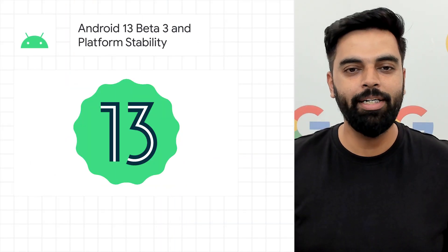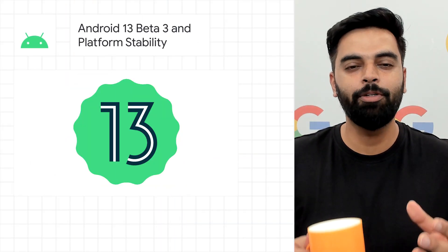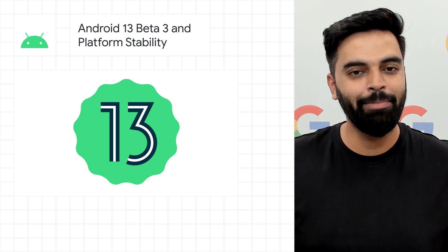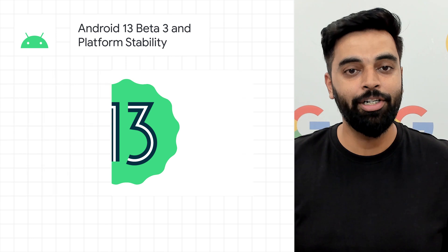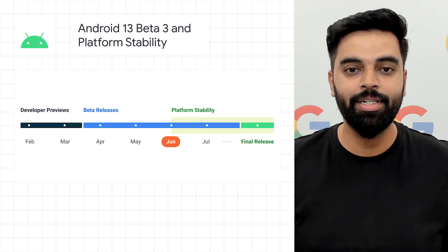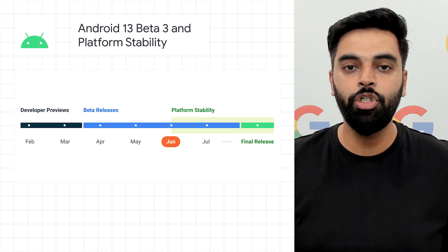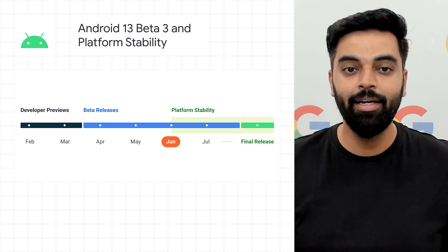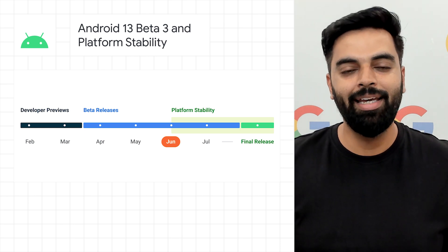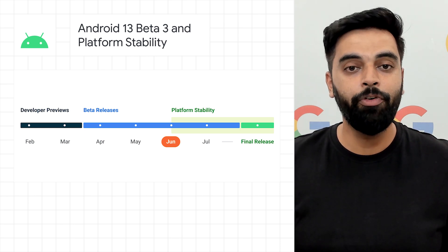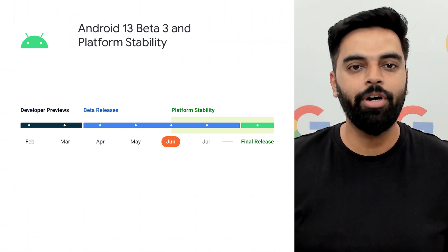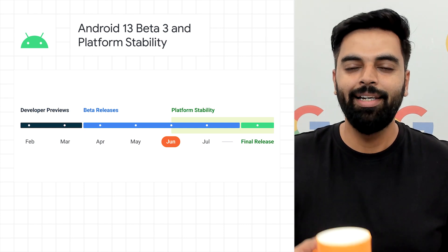We released the third beta of Android 13, taking us into the final phase of our cycle, where we are focusing on polish and performance. Beta 3 takes Android 13 to platform stability, which means all the app-facing behaviors and APIs, including the official API Level 33 SDK and NDK APIs, are now final. All the app and game developers out there, you can confidently develop and release your compatibility updates and prepare your apps for the official release later in the year.